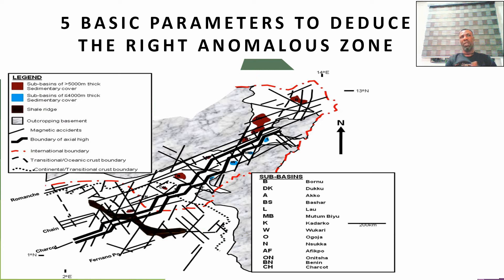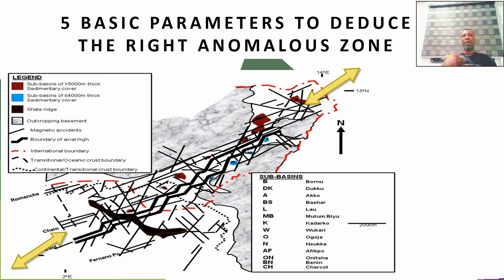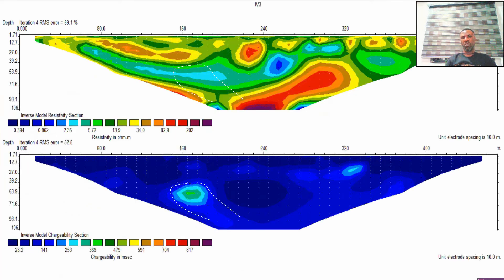For example, in the Benue Trough, most structures trend northeast, but some mineralizations are actually discordant to that, going orthogonal to the northeast structures. You should be able to delineate structures trending northeast and those trending northwest or south. You also need to make structural interpretations to see if they conform with your sections.